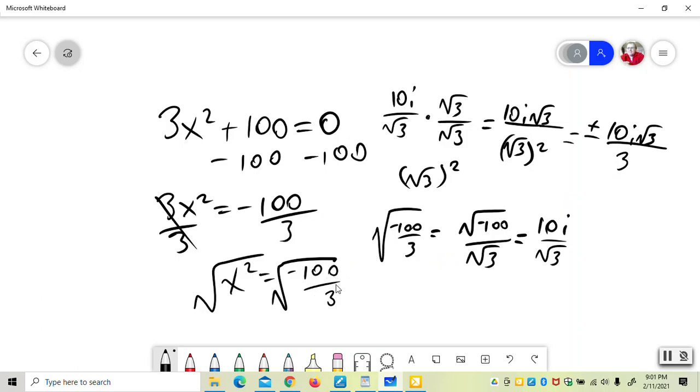The last thing I have to do is put my plus or minus in. Always put your plus or minus in, because every number has two square roots, a positive and a negative.